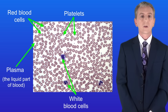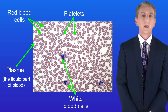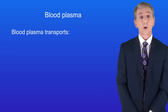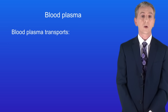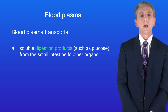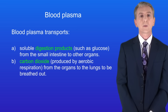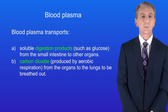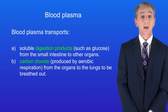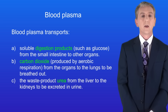We're going to look at the functions of the different parts of the blood — you need to learn these. Starting with blood plasma: plasma is the liquid part of the blood and its job is to transport dissolved substances around the body. Plasma transports soluble digestion products, for example glucose, from the small intestine to other organs. Plasma transports carbon dioxide from the body cells to the lungs to be breathed out — remember that carbon dioxide is produced by aerobic respiration. Lastly, plasma transports the waste product urea from the liver to the kidneys to be excreted in urine.